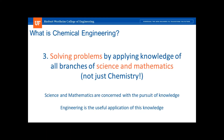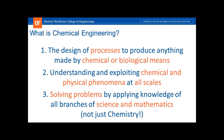To summarize, these are my three working definitions of chemical engineering. First, to design processes to produce anything made by chemical or biological means. Second, to understand and exploit chemical and physical phenomena at a range of scales. Third, to solve problems by applying knowledge of all branches of science and mathematics, not just chemistry.